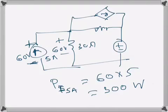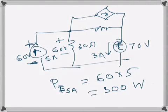In summary: the 5A current source delivers 300 watts. The voltage source VS, with 70 volts and 3 amps flowing in the absorbing direction, is acting as a power sink, absorbing 210 watts.